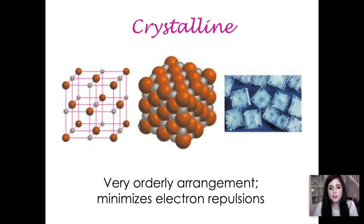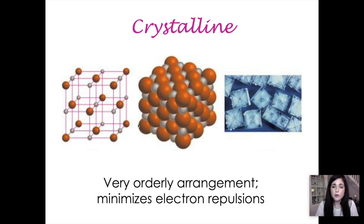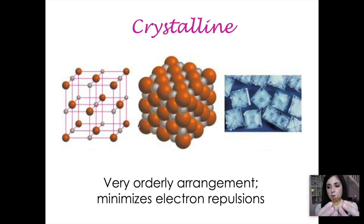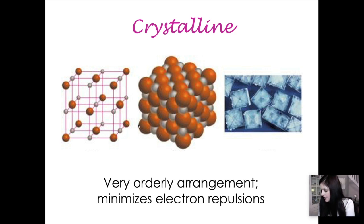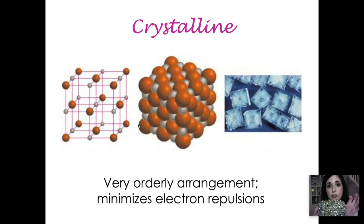Ionic solids are crystalline in nature — very orderly arrangements. The reason they form these orderly arrangements is because the atoms want to minimize their electron repulsions. Chloride ions with a negative charge want to be surrounded by positively charged sodium ions. Therefore they arrange themselves perfectly with cations and anions alternating, forming very crystalline structures. These crystals actually grow in a specific ratio because of the way the atoms form and the way their crystal lattice looks.